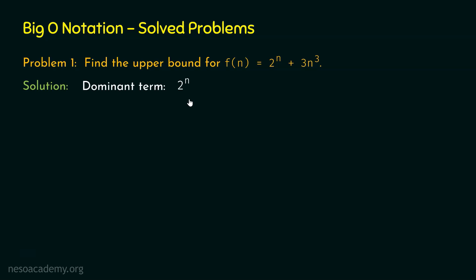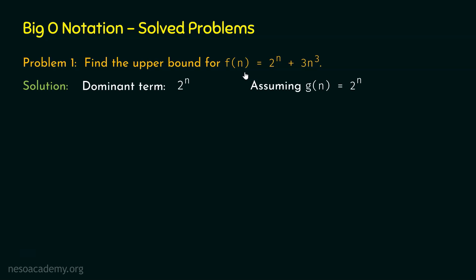Step number 2 is to assume some G(n) according to the dominant term. We want G(n) to be the least upper bound. Let us assume G(n) equal to 2 to the power n, which is the dominant term itself, because it might be the least upper bound for F(n). F(n) is equal to 2 to the power n plus 3n cubed. If we multiply G(n) by some constant, it might be possible that it will surpass F(n) after some point.